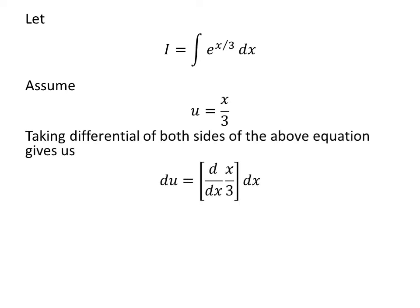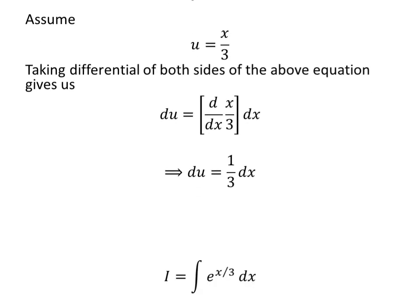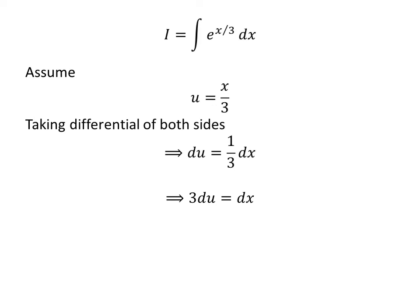Taking the differential of both sides, we get differential of u is equal to the derivative of x upon 3 with respect to x, times the differential of x. As we know, the derivative of x upon 3 with respect to x is 1 upon 3, so we are left with du equals 1 upon 3 times dx. Taking the 3 to the left, we get 3 times du equals dx.